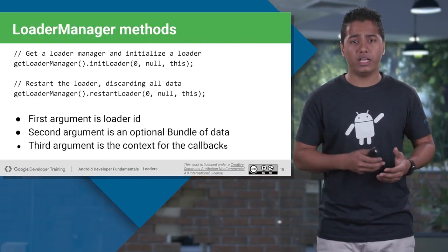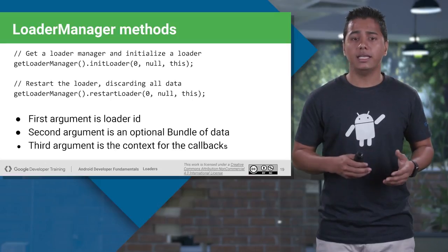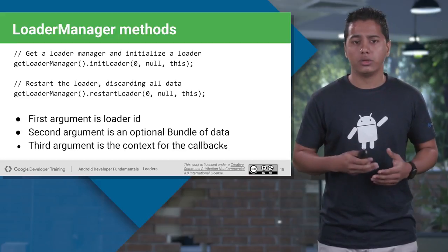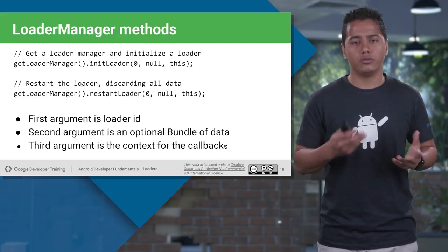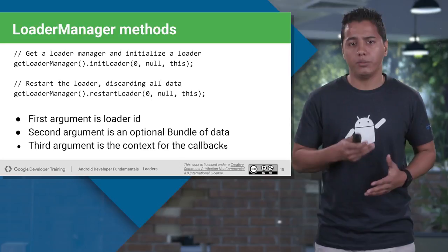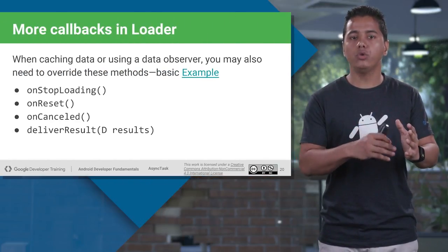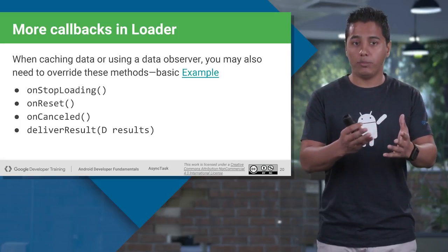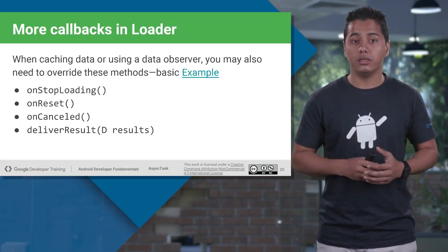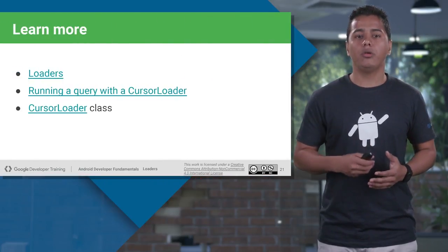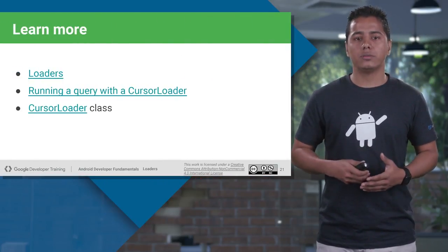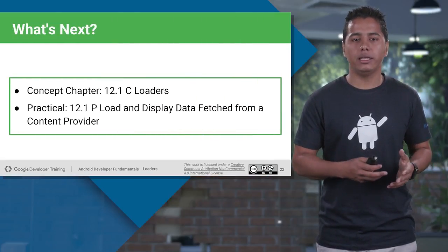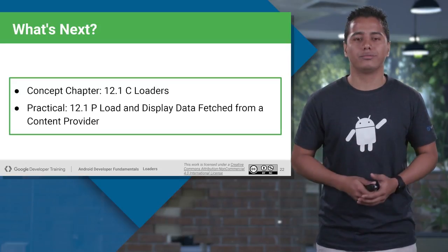The first argument in initLoader is your LoaderID. The second is your Bundle data — if you have some saved data and want to use it again, you can use that. The third is the context of the callbacks, indicating where exactly you are implementing all the callback methods. If you want to cache data or use a data observer, you need to override methods like onStopLoading, onReset, onCancel, and deliverResult. To learn more about loaders and cursor loaders, please follow the provided links. Next, we're going to see the concept and practical in our practical Gitbook. Thank you.